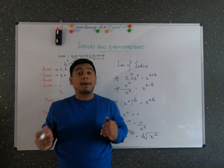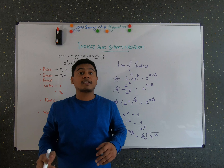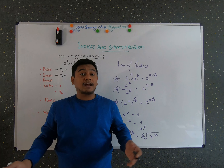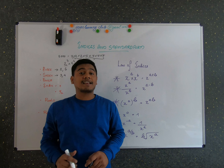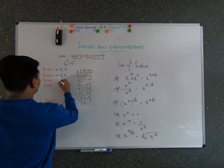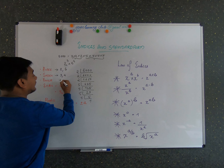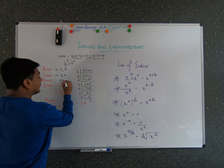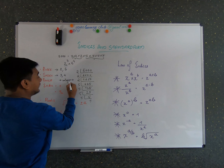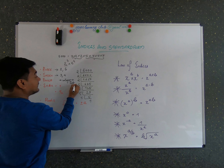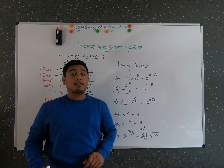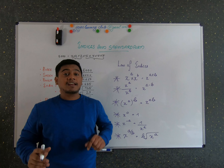For example, 2 raised to 4, or 5 raised to 7, or 10 raised to 51 — these are all examples of power numbers. Any number where an integer is at the index position can be called a power number.